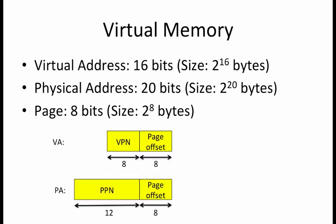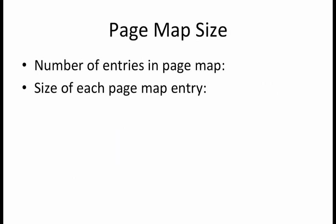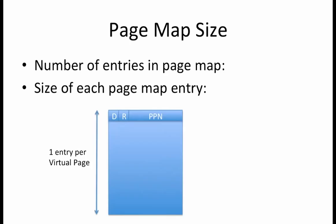This means that the 16-bit virtual address consists of 8 bits of page offset and another 8 bits for the virtual page number, or VPN. The 20-bit physical address consists of the same 8-bit page offset and another 12 bits for the physical page number, or PPN. The first question we want to consider is what is the size of the page map in this example. Recall that a page map has one entry per virtual page in order to map each virtual page to a physical page. This means that the number of entries in the page map is 2 to the 8, where 8 is the number of bits in the VPN. The size of each page map entry is 14 bits: 12 for the PPN, one for the dirty bit, and one for the resident bit.